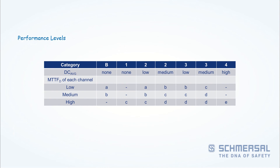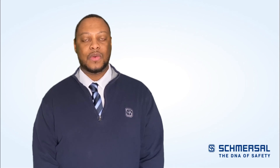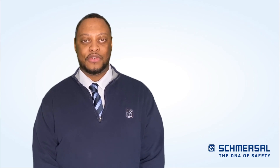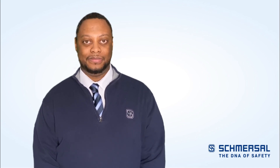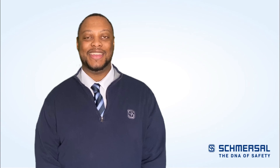Once you have these four parameters, you can use the simplified method to determine where you are for your performance level, or you can work backwards to say this is where I need to be for performance level and these are the options I need to get there. If you have any questions about ISO 13849, performance levels, and how to implement that, please give us a call. We are always happy to help. Thank you and have a safe day.